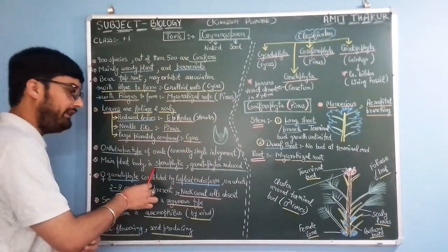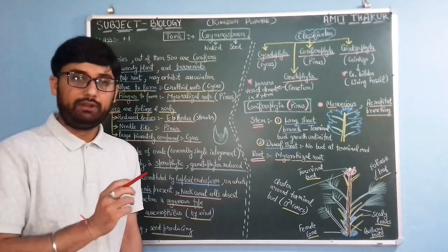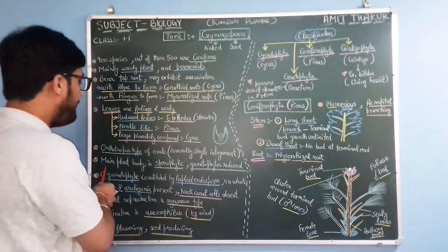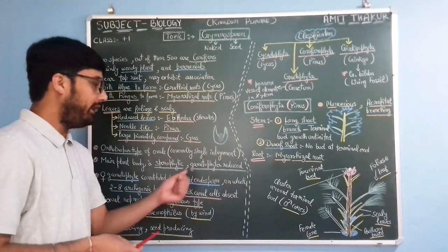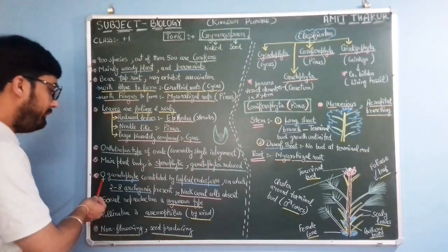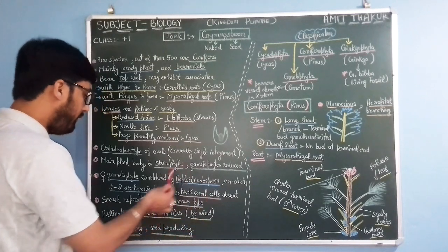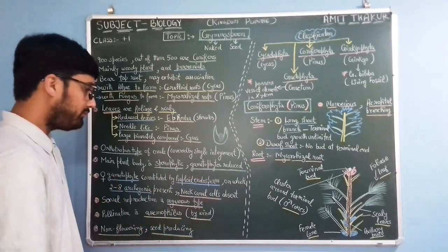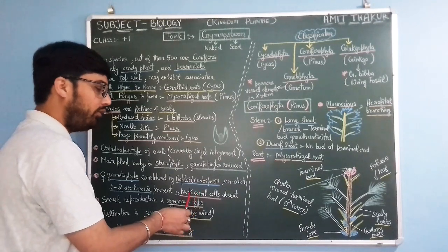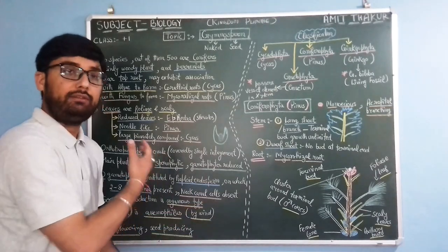The main plant body in gymnosperms is sporophytic, similar to pteridophytes, while in bryophytes the main plant body was gametophytic. The gametophytic body in gymnosperms is reduced. The female gametophyte is constituted by haploid endosperm on which two to eight archegonia are present. Neck canal cells, which were present in previous divisions, are absent in gymnosperms.